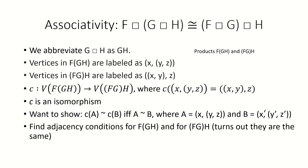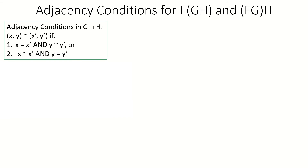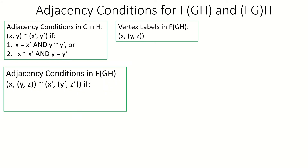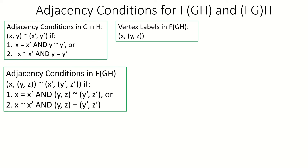One approach to show this would be to write out the set of conditions under which a pair of vertices are adjacent in f(gh), and compare this to the set of conditions under which a pair of vertices are adjacent in (fg)h, where the adjacency conditions are written in terms of the adjacency or equality of x and x prime, y and y prime, and z and z prime. Let's start with the conditions under which a pair of vertices in f(gh) are adjacent. Recall the adjacency conditions for our Cartesian product and how the vertices of f(gh) are labeled. That would mean x equals x prime in graph f and yz is adjacent to y prime z prime in graph gh, or x is adjacent to x prime in graph f and yz equals y prime z prime in graph gh.